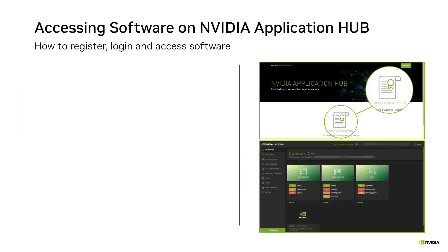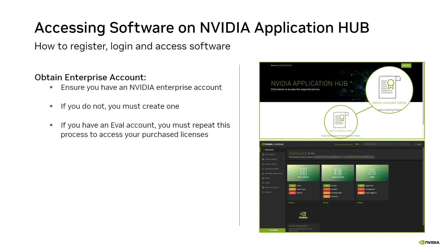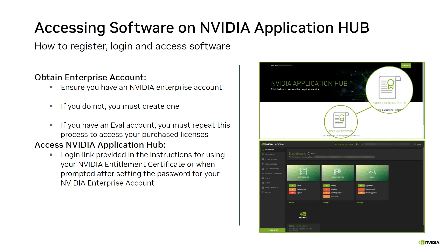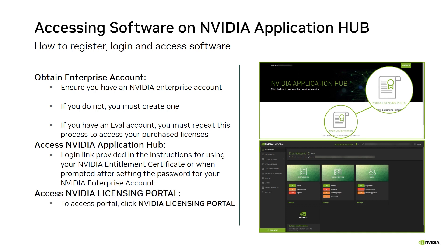The first thing you need to do is obtain an NVIDIA Enterprise Account if you don't have one already. If you have an evaluation account, you must register for an NVIDIA Enterprise Account to access your purchased licenses. Armed with your credentials, access the NVIDIA Application Hub. After login, the NVIDIA Application Hub Services page opens. Access the NVIDIA Licensing Portal by clicking NVIDIA Licensing Portal — the NVIDIA Licensing Dashboard page opens. The next task is to download the Enterprise Launcher software.